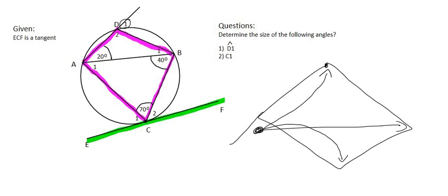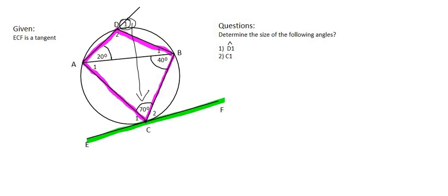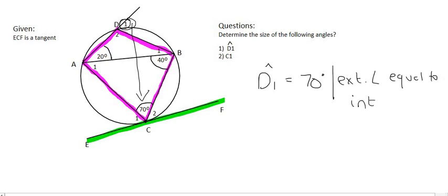So if we have a look at D1, which angle is opposite to that? Well, that's going to be this angle over here, C. And so we can say that D1 will be equal to 70 degrees, and that's due to the exterior angle equal to the interior opposite angle.